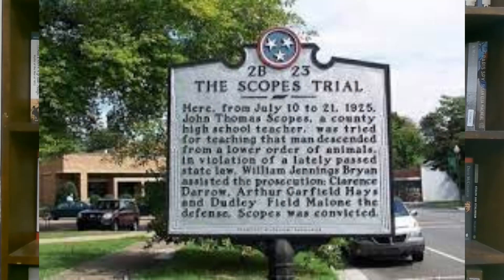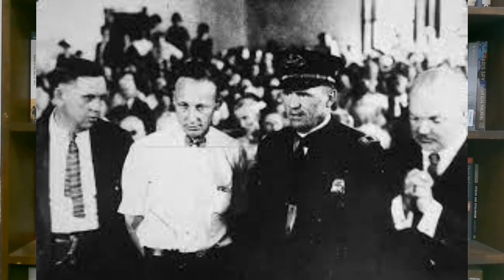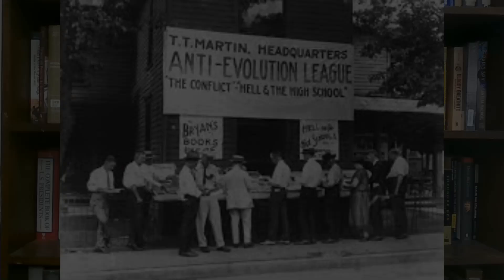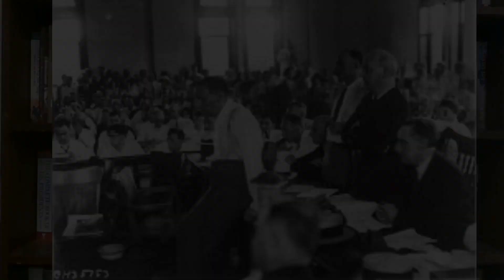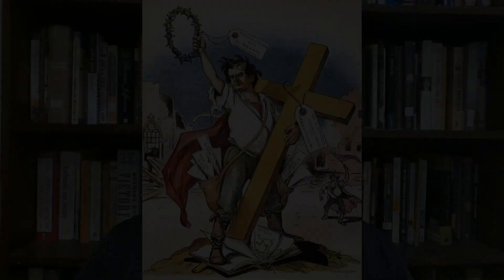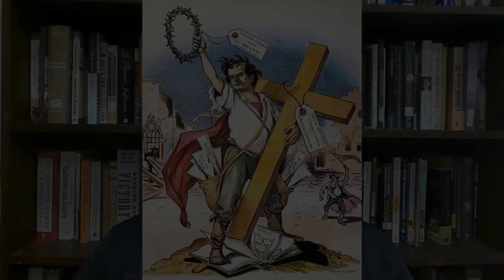The Scopes Trial was an American legal case in 1925 in which substitute high school teacher John T. Scopes was accused of violating Tennessee's Butler Act, which made it unlawful to teach human evolution in any state-funded school and required creationist views to be taught instead. Scopes purposely incriminated himself so the case could attract publicity. National reporters flocked to Dayton, Tennessee to cover the big-name lawyers who agreed to represent each side, including the famed William Jennings Bryan on the fundamentalist side.